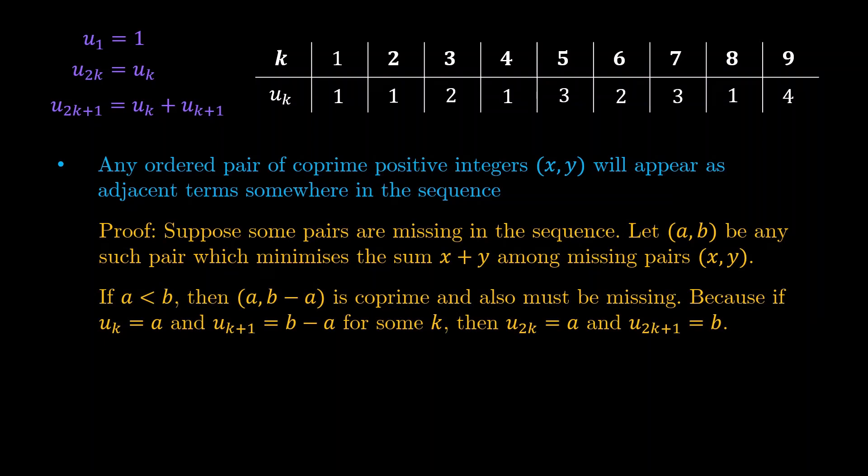Now, if this pair (a,b) has the fact that a is less than b, then we look at the pair (a, b-a). This is another coprime pair, and I claim that it must also be missing. Because otherwise, we have uk equals a, and uk+1 equals b-a for some k. Then u2k will be a, and u2k+1 will be equal to b. But we just said that (a,b) is a missing pair. This is a contradiction, because the new pair I just constructed has an even smaller sum than before.